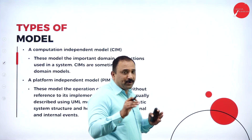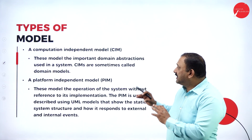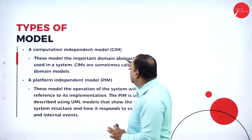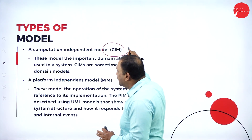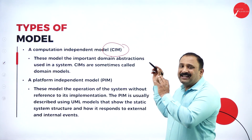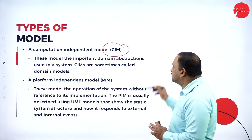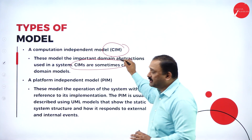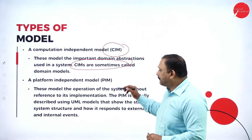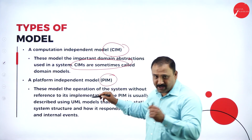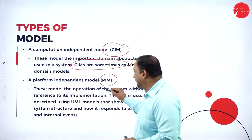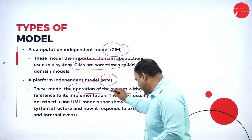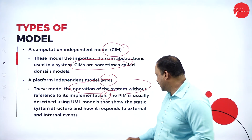The first type of model is the Computation Independent Model, or CIM, which is based on domain abstraction factors. CIMs are sometimes called domain models. They are platform independent and model the operation of the system without reference to its implementation — which is a very important distinction.